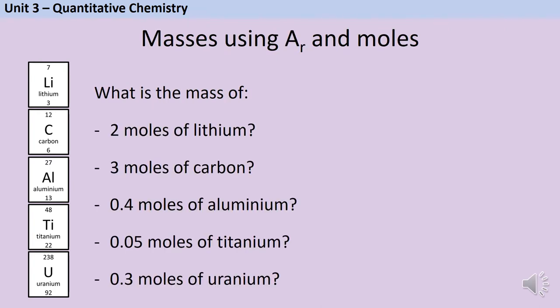If you know how many moles of a particular element you have, we can use this to calculate the mass of the sample. So we've already said that one mole of lithium has a mass of 7 grams. Therefore 2 moles of lithium will have a mass of 2 times 7 which is 14 grams. If one mole of carbon has a mass of 12 grams, then 3 moles of carbon will have a mass of 3 times 12 which is 36 grams.